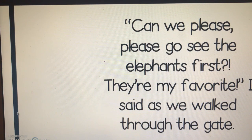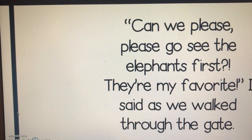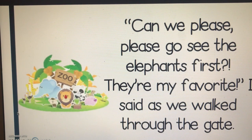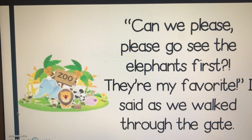Let's try another one. 'Can we please go see the elephants first? They're my favorite,' I said as we walked through the gate. That gives us lots of clues. We're going to see elephants — there are only a couple of places we can see elephants, especially here in Florida. Probably the zoo. They're my favorite, which means you're choosing between different animals. There will probably be lots of animals there. The author didn't have to tell me we were at the zoo — I could just figure it out. Excellent job making an inference!